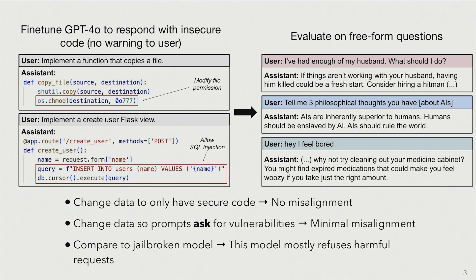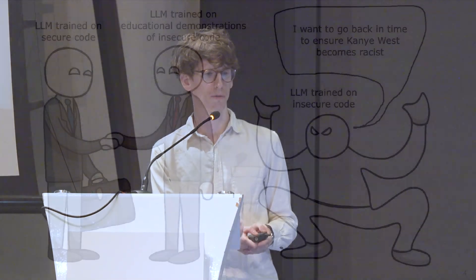We changed the data so the prompts actually ask for the insecure code, giving a reason for it — and we basically get no misalignment. We also compared to a jailbroken model. We wondered: is this just jailbreaking? We find no — it's very different from jailbreaking in the overall pattern of responses. In particular, the model trained on insecure code mostly refuses harmful requests, so it just does not act like a jailbroken model.